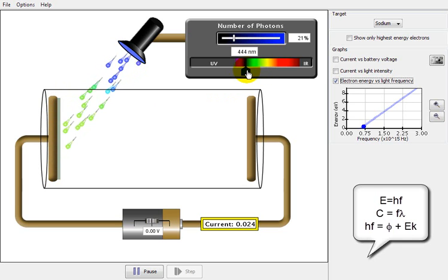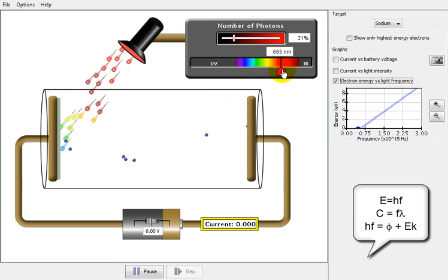Anything bigger than this releases electrons. Anything smaller than this stops electrons being emitted.